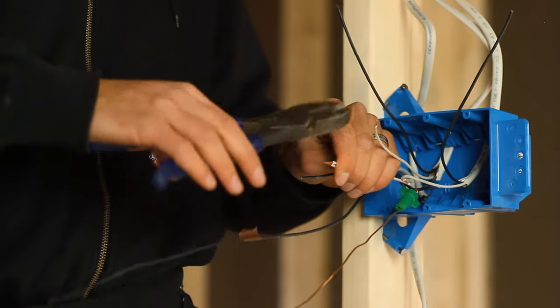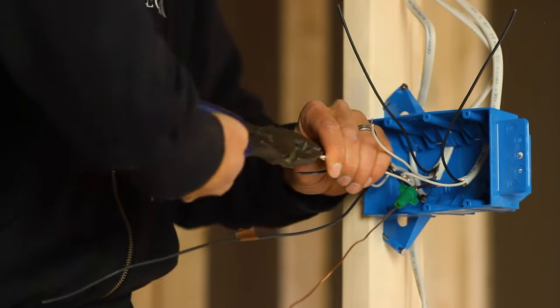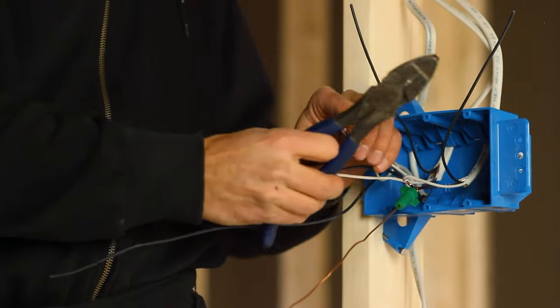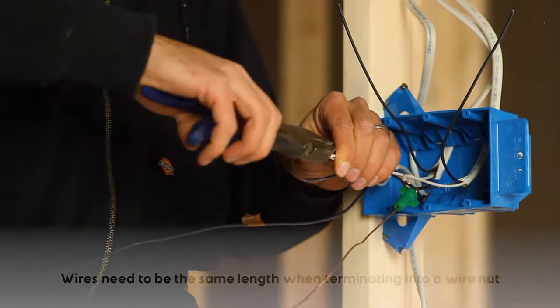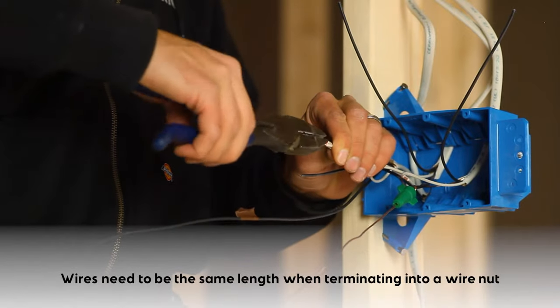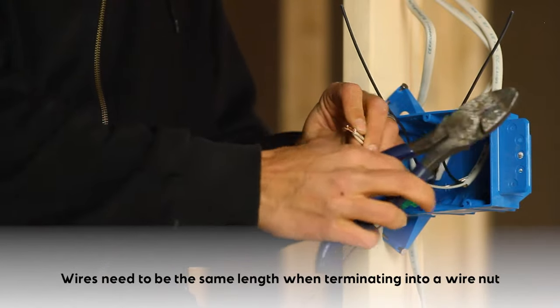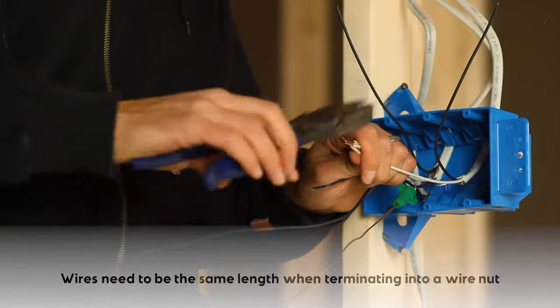Then I'm going to provide a pre-twist. I'm going to do one revolution for the first conductor, first set of two conductors. I'm going to introduce my third conductor, provide another revolution and a half, give or take. That's not a science. That's based upon experience.